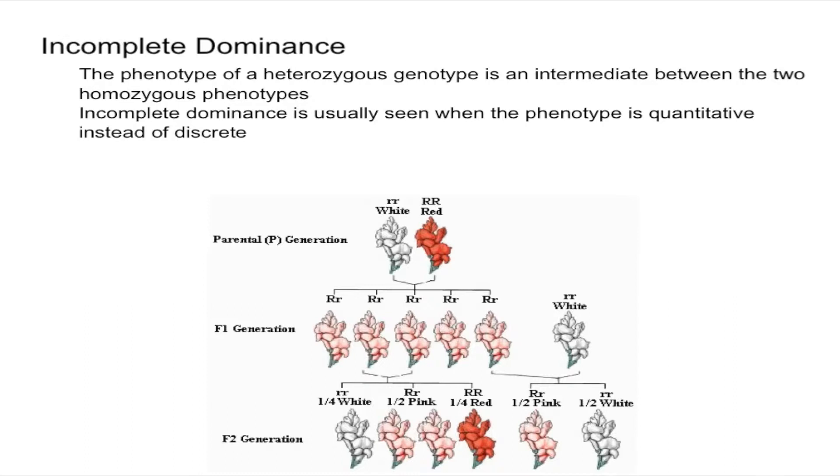In terms of incomplete dominance, the most common example is the example of snapdragons. As you can see down here we have one white and one red snapdragon.